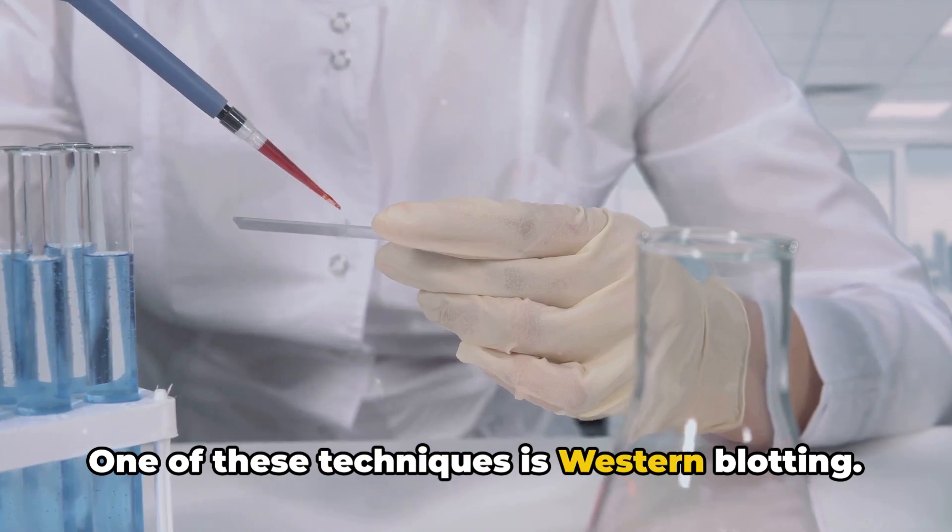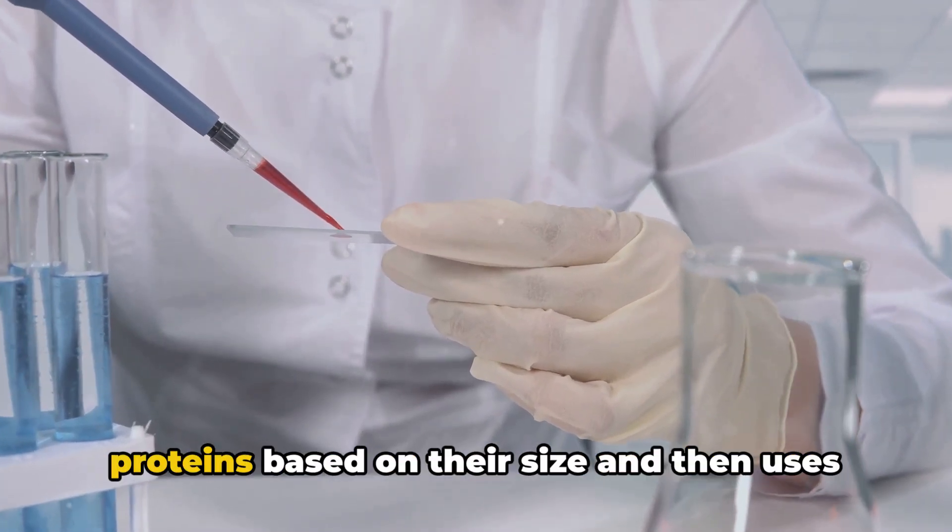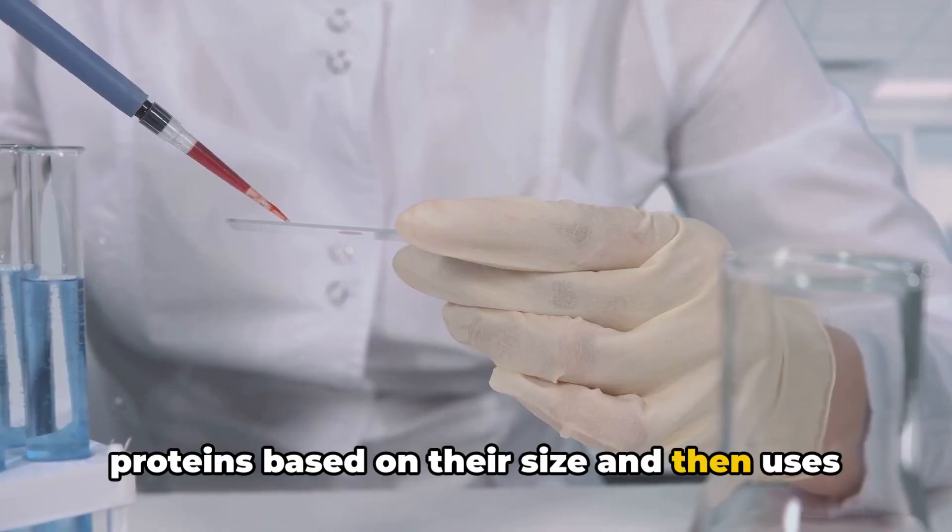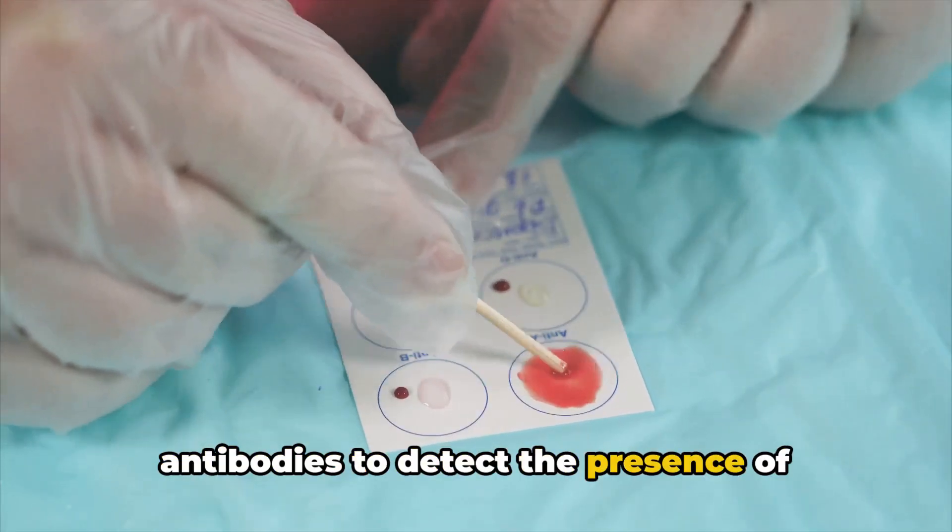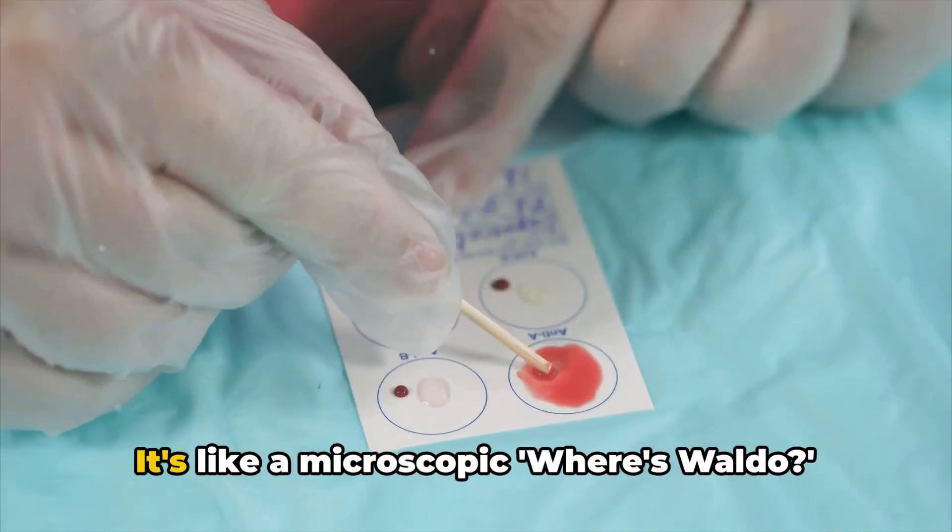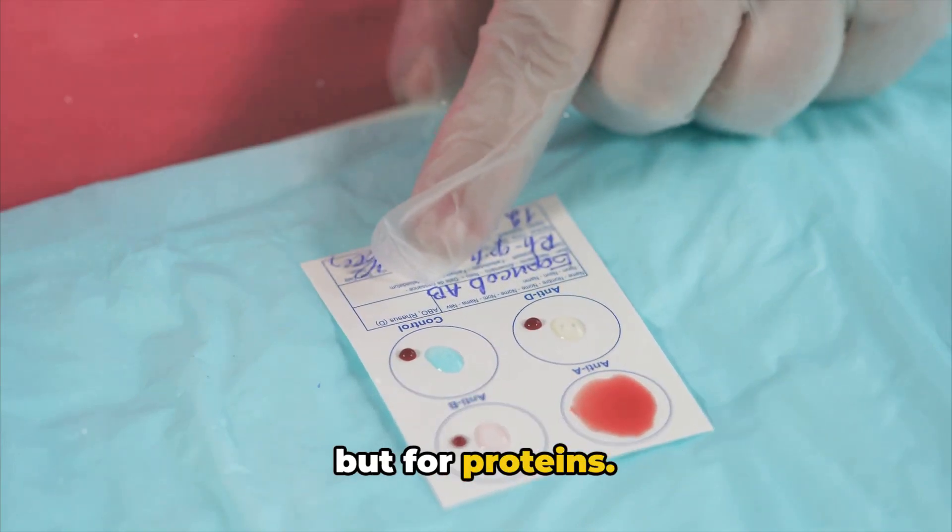One of these techniques is Western blotting. It's a powerful method that separates proteins based on their size and then uses antibodies to detect the presence of specific proteins. It's like a microscopic Where's Waldo, but for proteins.